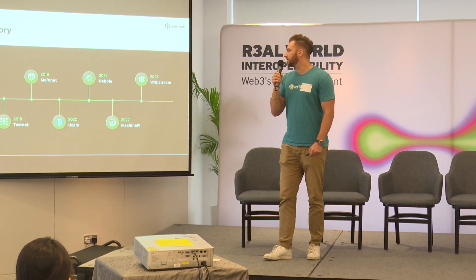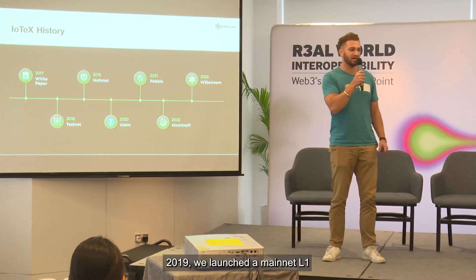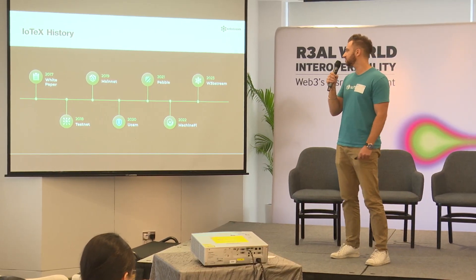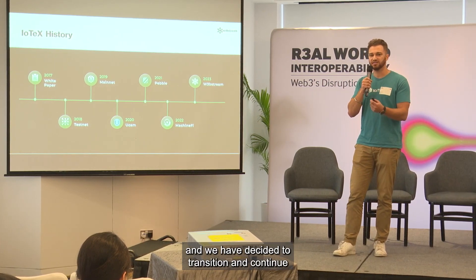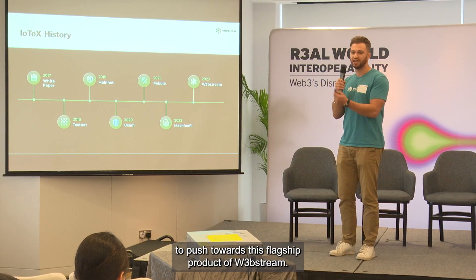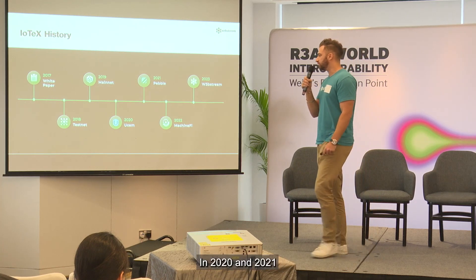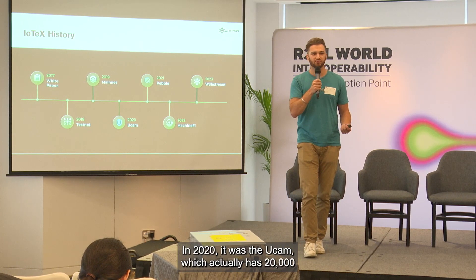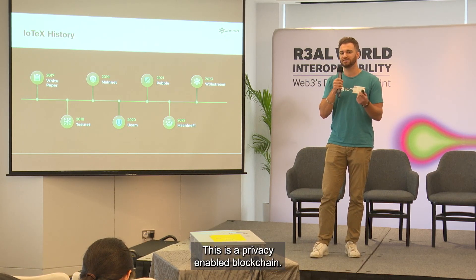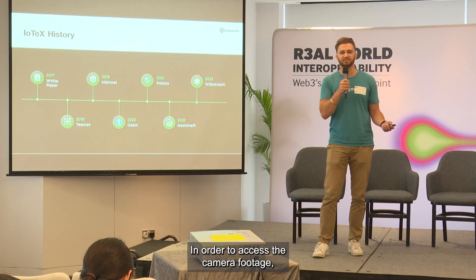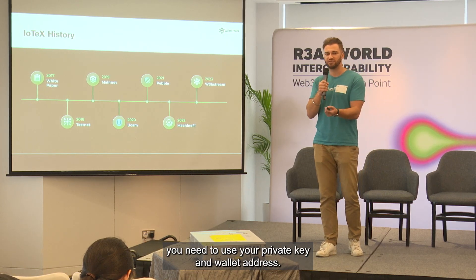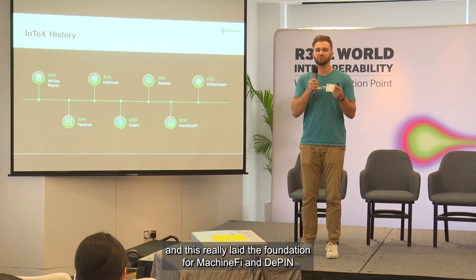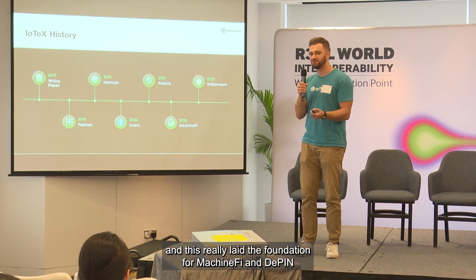This is why in 2019 we launched a mainnet L1 for exactly that reason. This has become a crowded space, so we decided to transition and continue to push toward our flagship product, Web Stream. In 2020 and 2021 we launched a couple of proof-of-concept devices. In 2020 it was the UCam, which has 20,000 devices out there right now — a privacy-enabled blockchain camera where you need your private key and wallet address to access the footage.